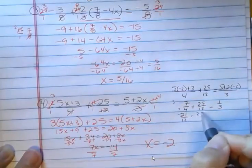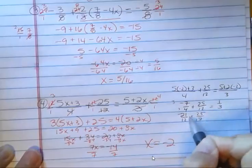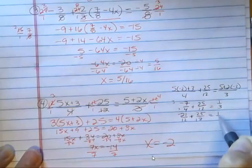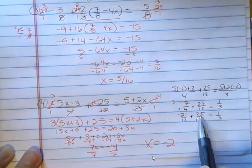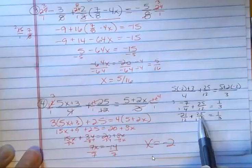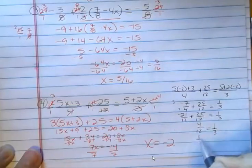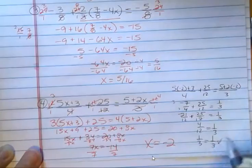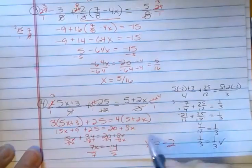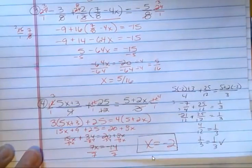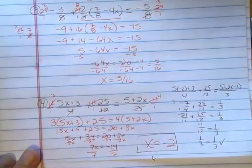Negative 21 and positive 25. That's 4. And 4 twelfths indeed does equal one third. So our answer, x equals negative 2 checks out. So that's how you can work equations with fractions.